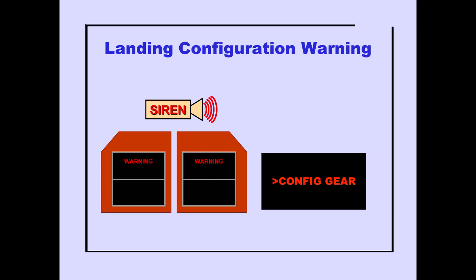The landing configuration warning system consists of activation of the warning siren, illumination of the master warning lights, and the ICAS warning message Configuration Gear.